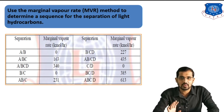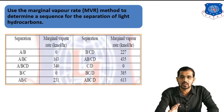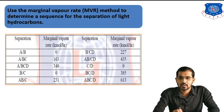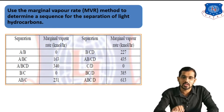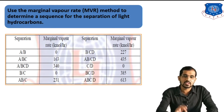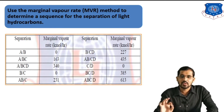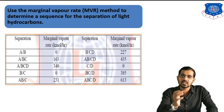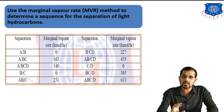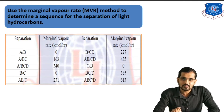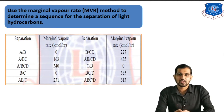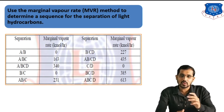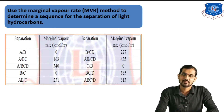In this table we have separations of components and marginal vapor rates for all those separations. Now we are going to use all these values to find the best combination — the best sequence. For four components, five sequences are possible. I will explain how to find the number of sequences for a given number of components in coming slides. But first, you should know all five figures and how to draw them, as I explained in the heuristics lecture on rules for sequencing distillation columns.